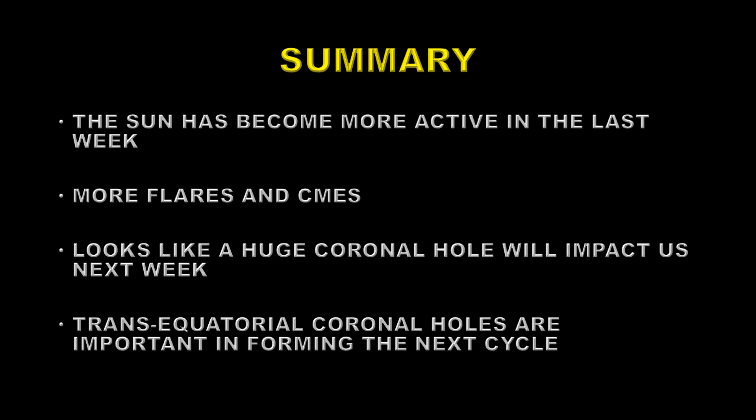So in summary then the sun has become more active in the last week with more flares and more coronal mass ejections. It looks like there's a huge coronal hole on its way that will impact us next week and we're seeing transequatorial coronal holes that are important in forming the next cycle and we haven't yet reached solar maximum because we still have a strong polar coronal hole.